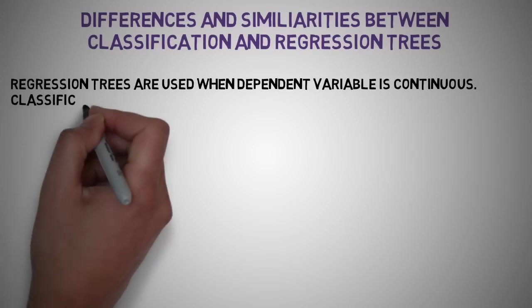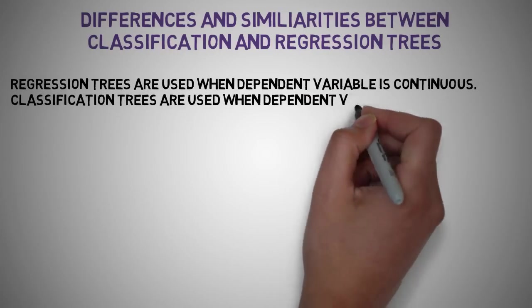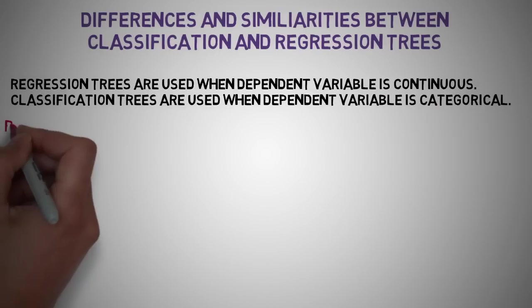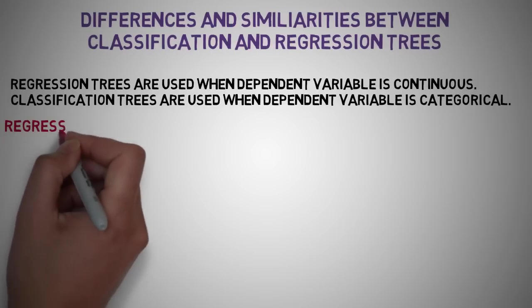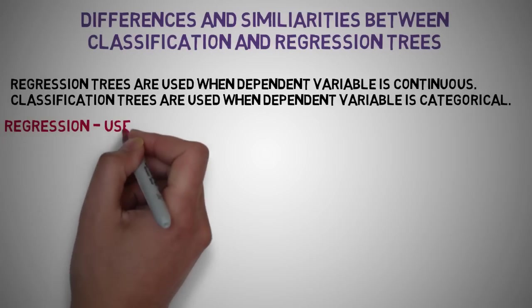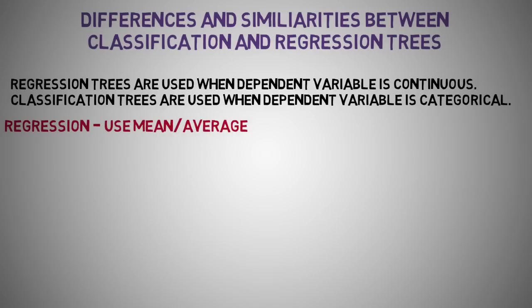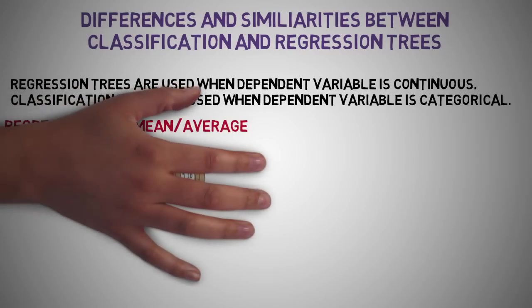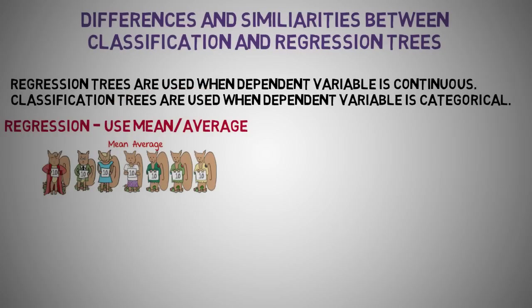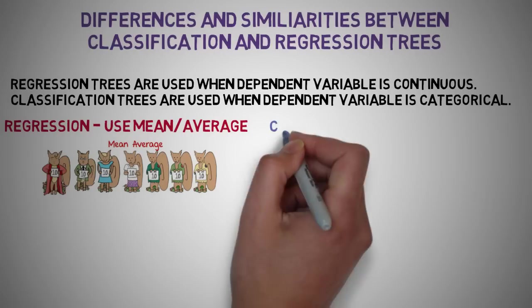Regression trees are used when the dependent variable is continuous. In the case of regression trees, the value obtained by terminal nodes in the training data is the mean or average response of the observations falling in that region. Thus, if an unseen data observation falls in that region, we'll make its prediction with a mean value.